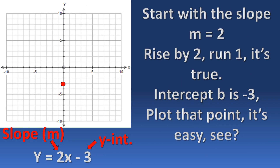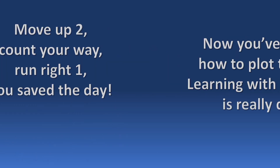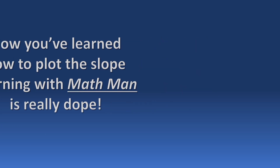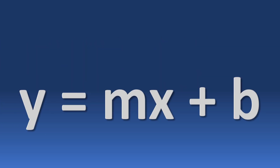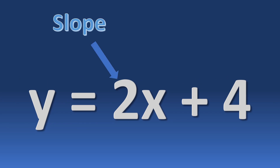Start with slope: m equals 2, rise by 2, run 1 — it's true. Intercept b is negative 3, plot that point, it's easy, see. Move up to the count way, run right one — you save the day. Now you learn how to plot the slope; learning with math, that's really dope.